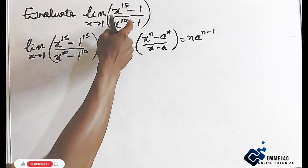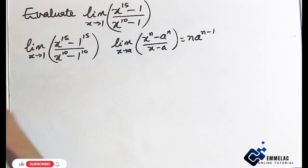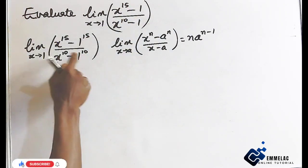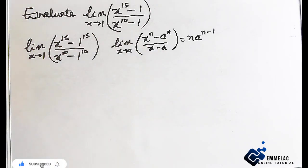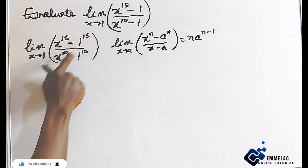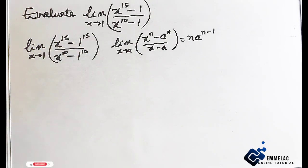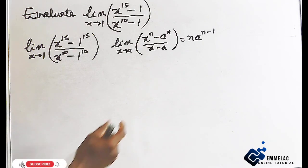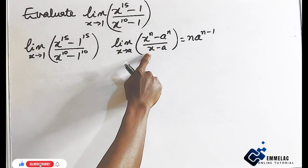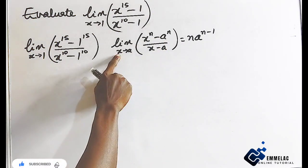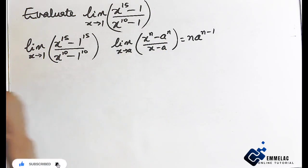First, let us simplify this function to give you this kind of form. Take note that we have x and 1 as the two common terms in this function. And if you look at the theorem, we also have x and a, as x approaches a.